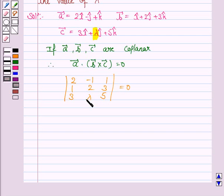Now we will expand this determinant. So we have 2 into (10 minus 3 lambda) minus (minus 1) into (5 minus 9) plus 1 into (lambda minus 6). This is equal to zero.